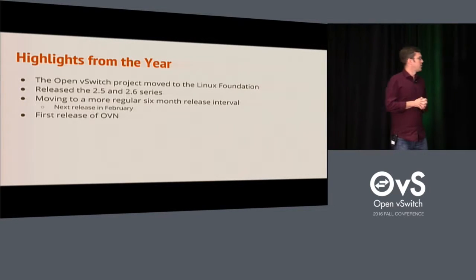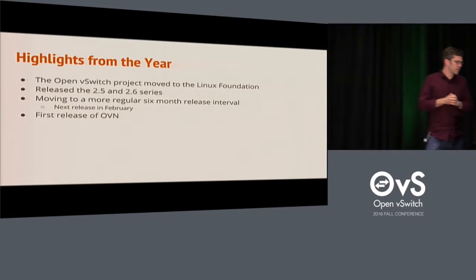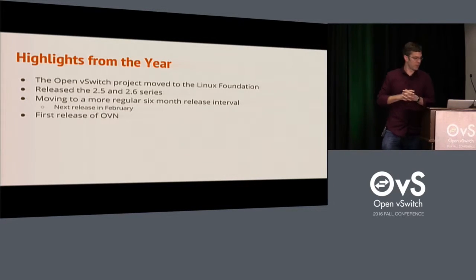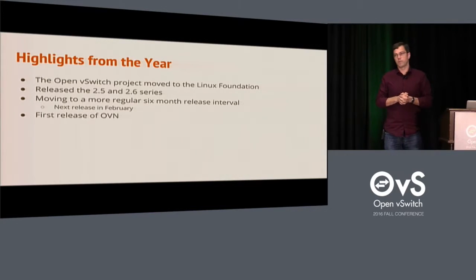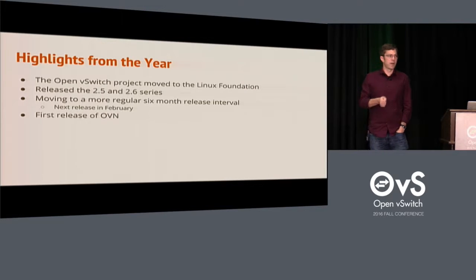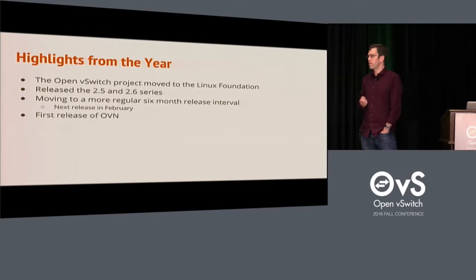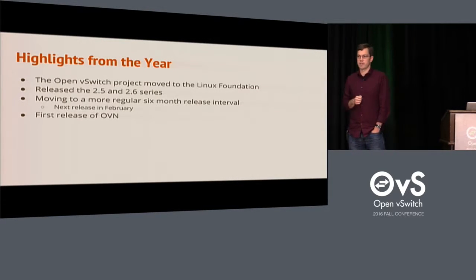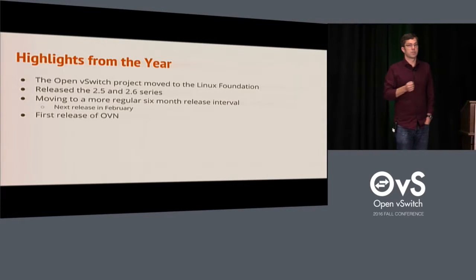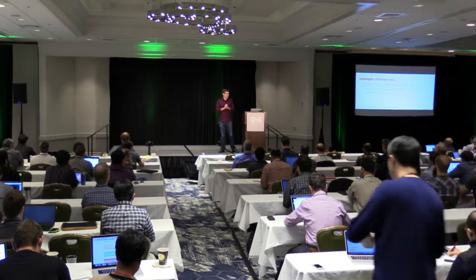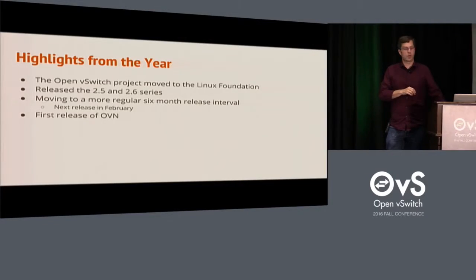Some of the highlights from this year: Ben had already mentioned that we moved to the Linux Foundation, and one of the greatest benefits will hopefully be less spam on the OVS dev mailing list, which has been a constant source of pain. We did two releases of Open vSwitch — 2.5 and 2.6. One major complaint about OVS was the irregular release schedule, so we've now moved to a six-month release cadence. The next release will be in February. And one of the biggest things we're excited about is the OVN project, with our initial release as part of 2.6.